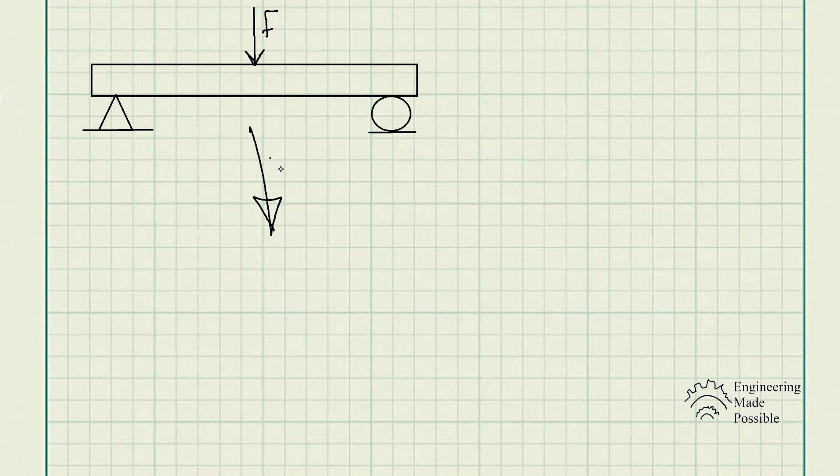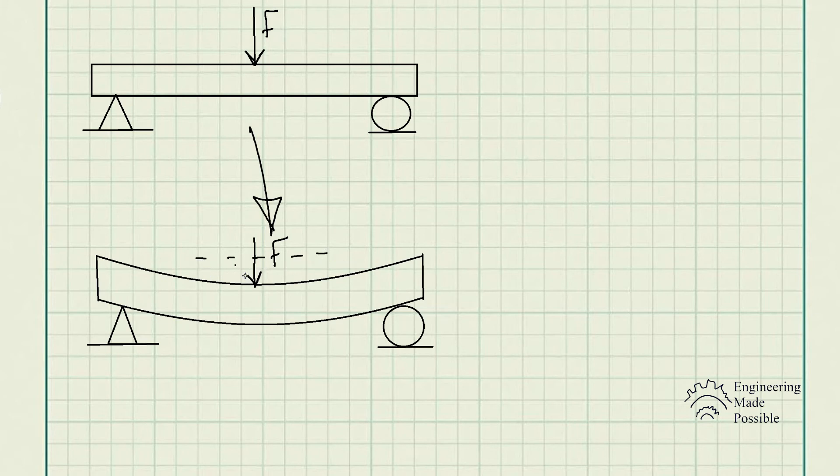If any external loading force F would be applied significantly, it would deform this beam. In reality, it will look much more similar to this, where it actually would deflect or deform from its original position by this amount. This would actually cause internal stress to be developed within the beam; this is known as bending stress.